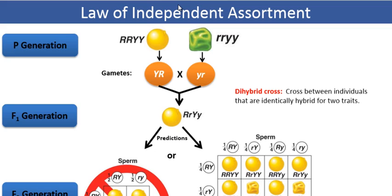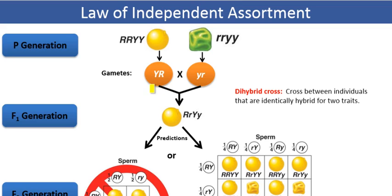All the gametes produced by the plant with the dominant phenotype — yellow round seeds — will have the same genotype: YR, representing both dominant alleles for seed color and seed shape. All the gametes produced by the plant with the recessive phenotype will have the recessive genotype — that is, the recessive alleles for seed color and seed shape: small y and small r.